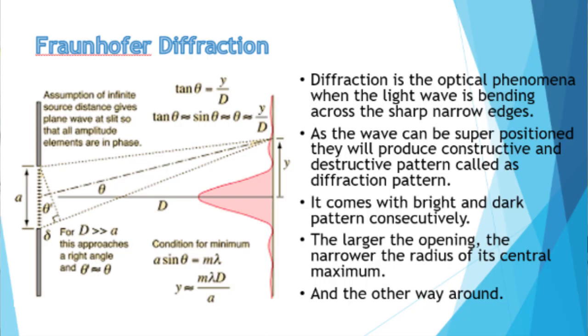As you go further from the central maxima, the intensity of the light decreases and slowly fades. The central maxima is created because of the superposition of daughter waveforms, so the intensity in the central maxima is higher than the rest. In this work we are using Fraunhofer diffraction because the laser beam produces a planar wave front.